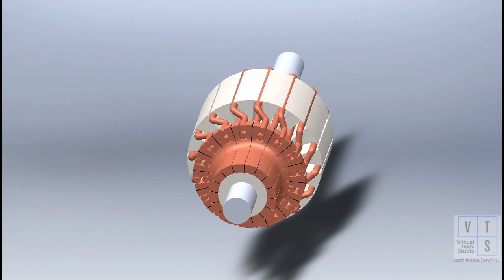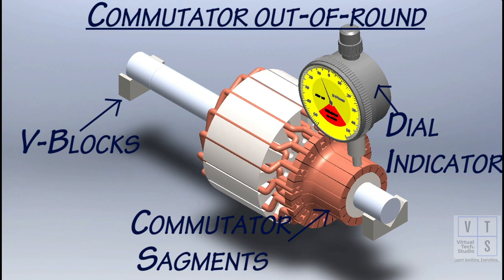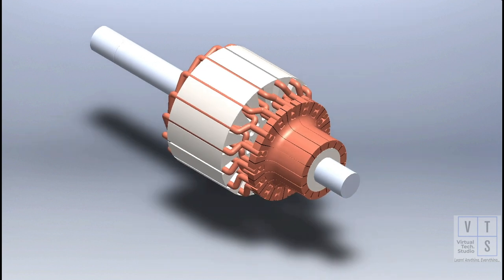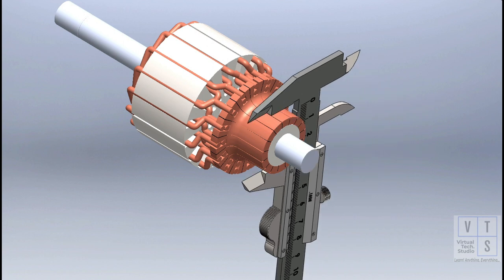Check commutator for runout with armature supported on V-blocks and compare out-of-round value with manufacturer recommendations. Correct it by using lathe if required. Check for wear and replace armature if diameter is below the prescribed manufacturer limit.